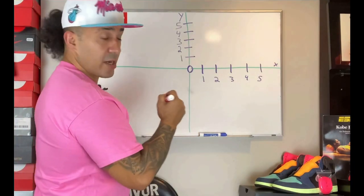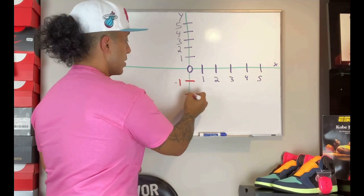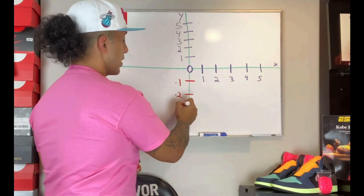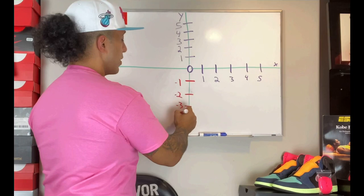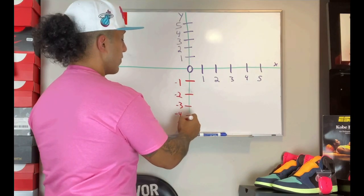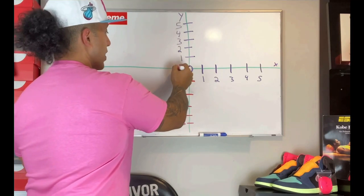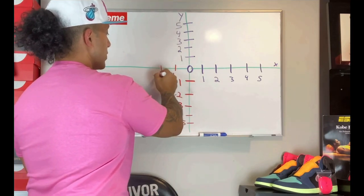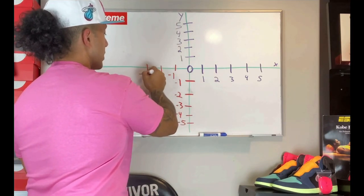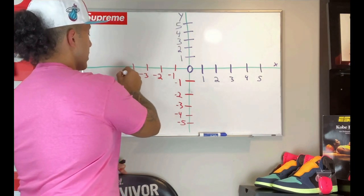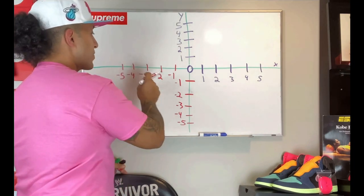-axis are negative numbers. We're gonna go negative 1, negative 2, negative 3, negative 4, and negative 5. And to the left of my origin I'm gonna go negative 1, negative 2, negative 3, negative 4, and negative 5. Now,